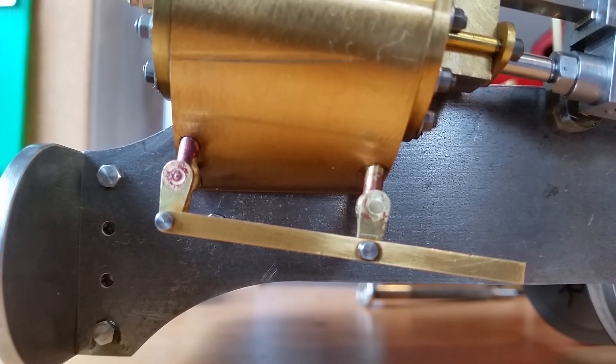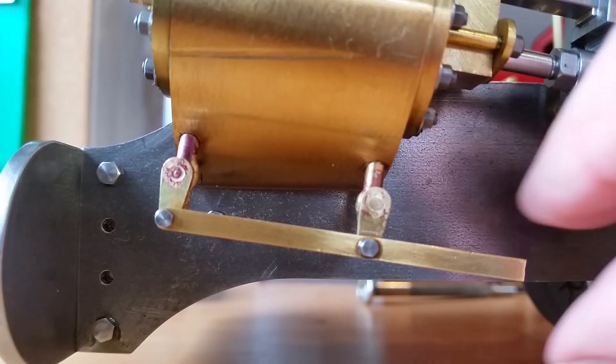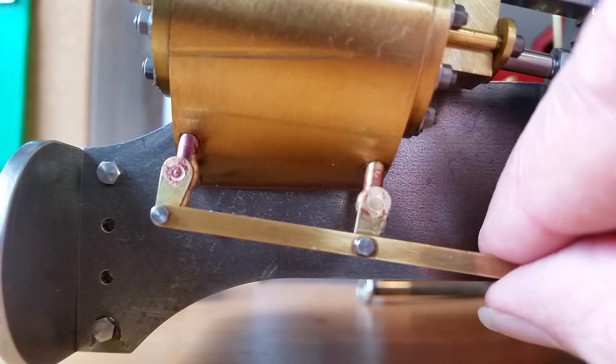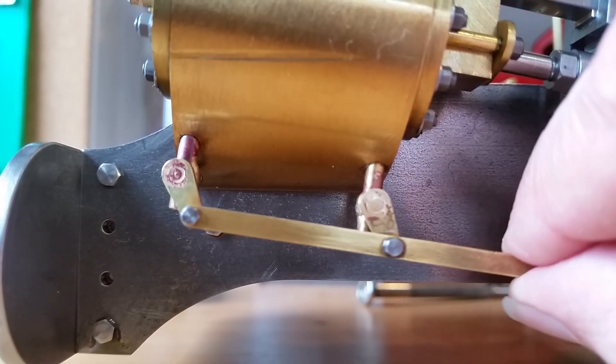Welcome to the live steam build of Charles, the Penrhyn quarry engine. This is being built to 1/12th scale to run on 45mm gauge track.